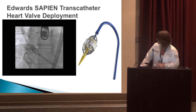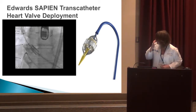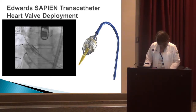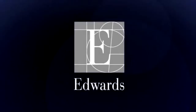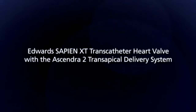You can inject a little contrast there and see the balloon — it looks like a little sausage — and this is the valve deployed. The doctors are now pulling the catheter out. We do pace the patients during this procedure to essentially eliminate cardiac output so the valve isn't ejected.